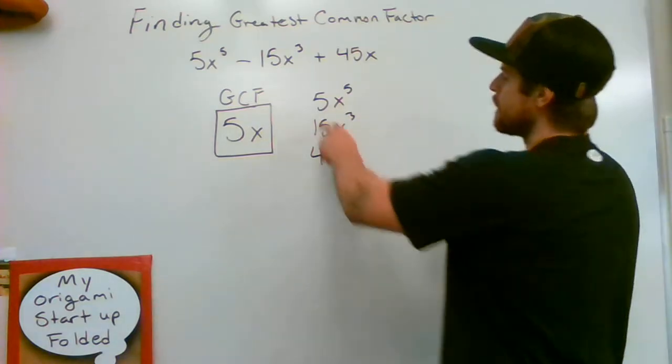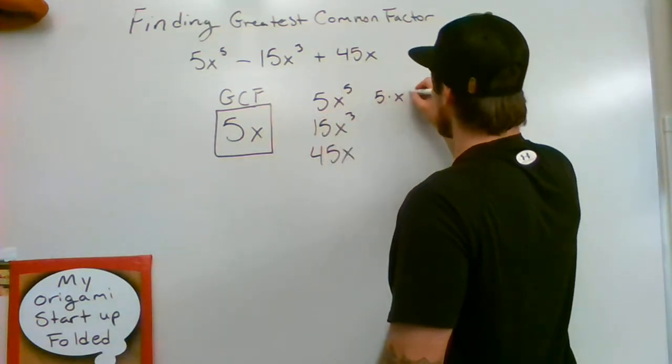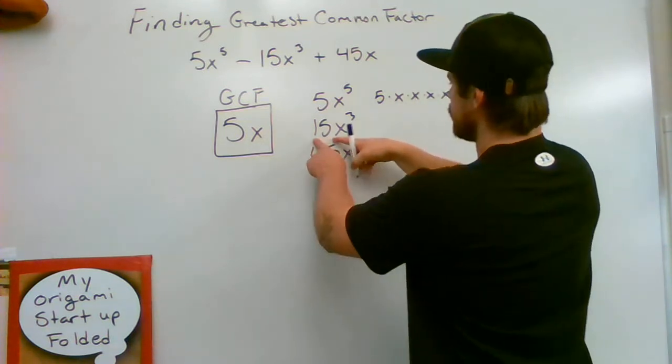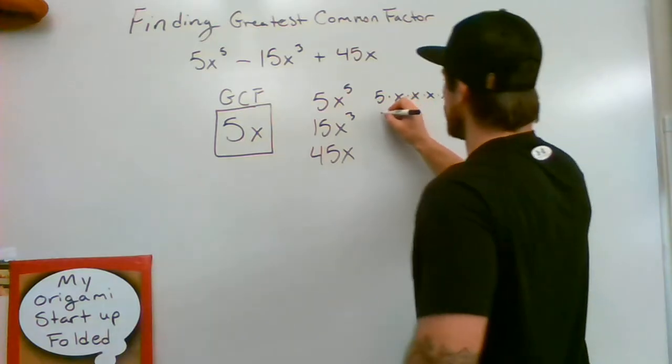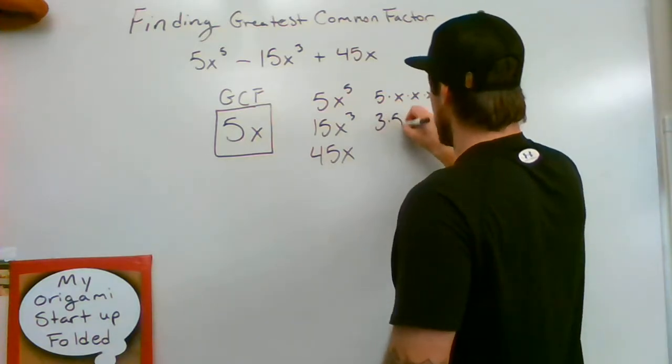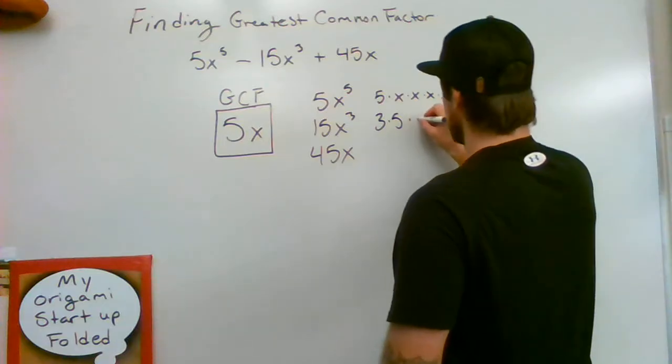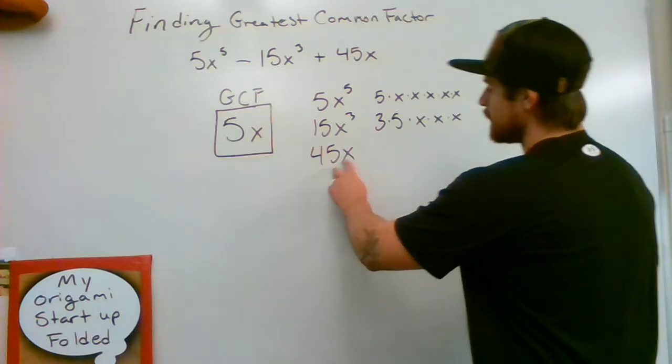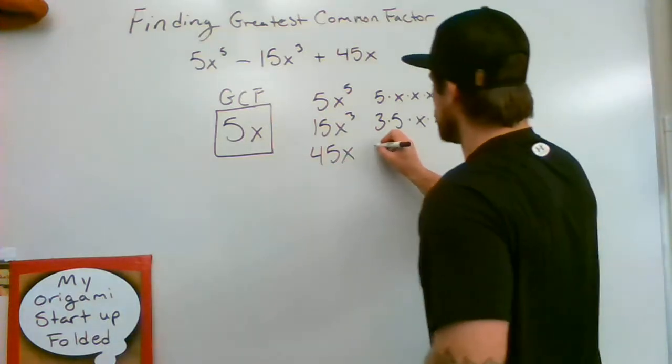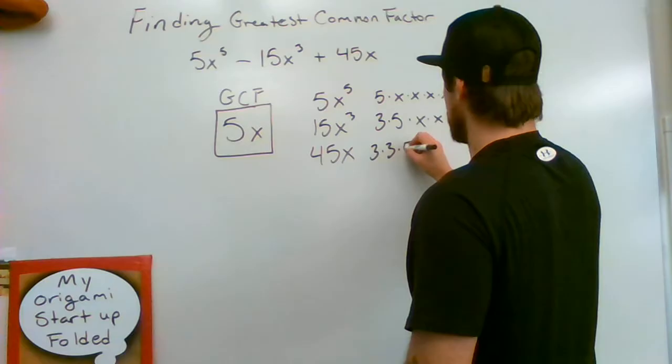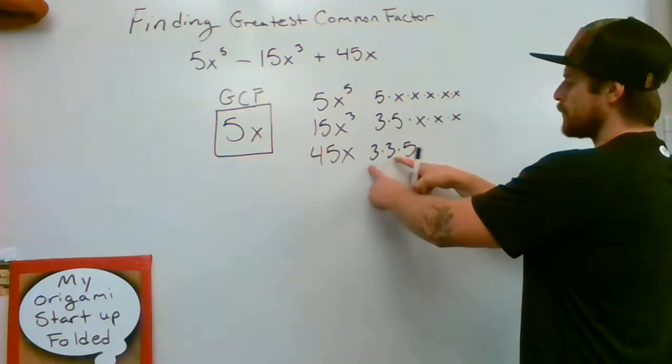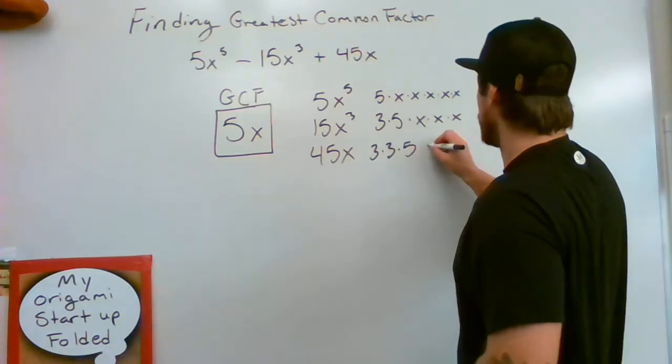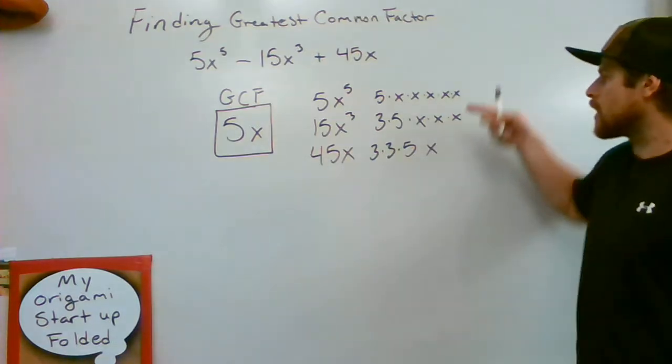What they would show is 5x to the 5th power is really a 5 times 5 x's. 15x to the 3rd power is really a 3 times a 5 times an x times an x times an x, 3 x's. And 45x is really, here are my prime factors, 3 times 3 times 5. 3 times 3 makes that 9. 9 times 5 makes a 45 total, and I have 1x.